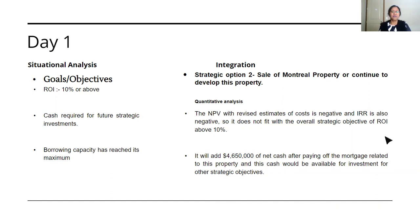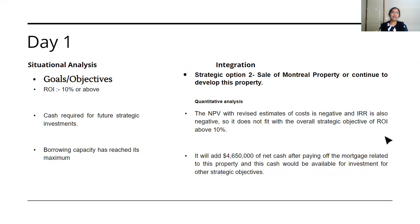I'm giving you specific examples based on the Distinct Hotel case that was tested last year. In the situational analysis, if you've written that the goal or objective of the company is ROI of 10% or above, they require cash for future strategic investments, and the borrowing capacity has reached its maximum — then you don't have cash to invest into something new. They can't take a new loan, so they need to circulate existing funds or sell something to make cash available. That new investment should have an ROI of 10%. Keep this at the back of your mind as you analyze your strategic options.